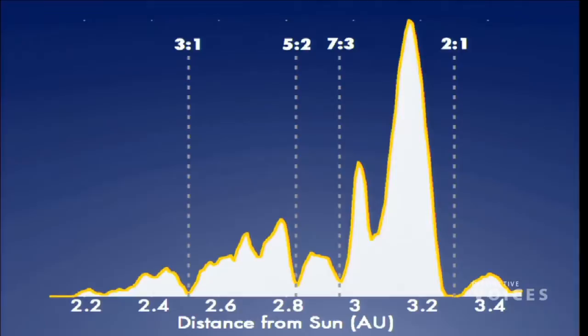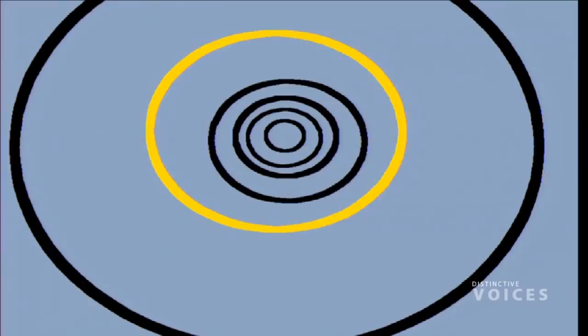Kirkwood discovered these gaps correlate to orbital periods that are integer ratios of Jupiter's period — called mean motion resonances. A 3-to-1 resonance means every three orbits of the asteroid equals exactly one orbit of Jupiter, so the asteroid keeps seeing Jupiter at the same point in its orbit. Jupiter, this huge mass far away, perturbs the orbit dramatically. For most asteroids this gets averaged out, but for these resonant asteroids the perturbation from Jupiter is always at the same spot, and it really pushes and pulls on their orbits, changing them dramatically.